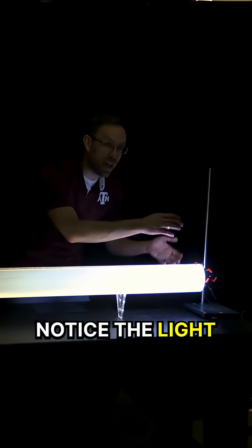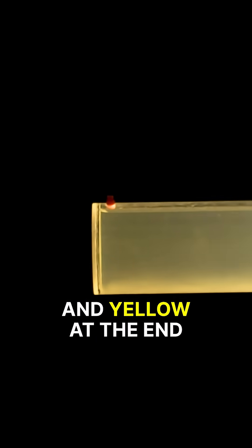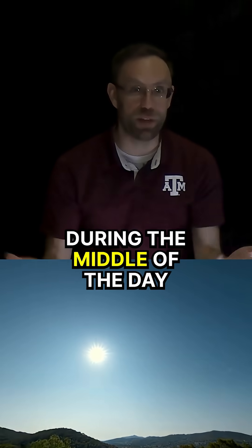This is our sunset. Notice the light transition from color from blue to beautiful orange and yellow at the end. Why is that? Well, that's directly related to why the sky is blue during the middle of the day.